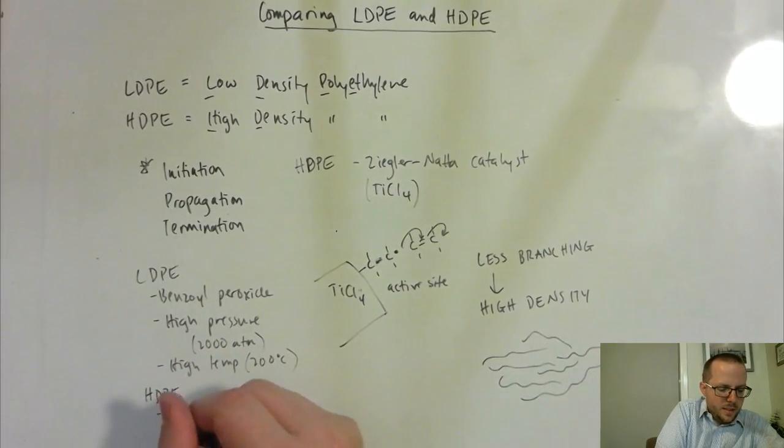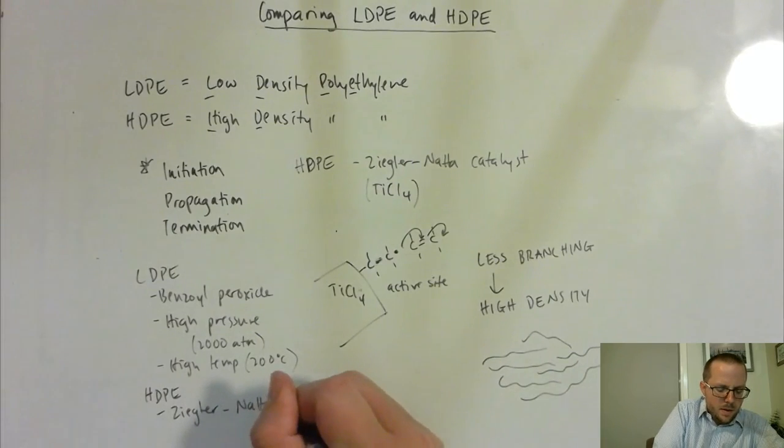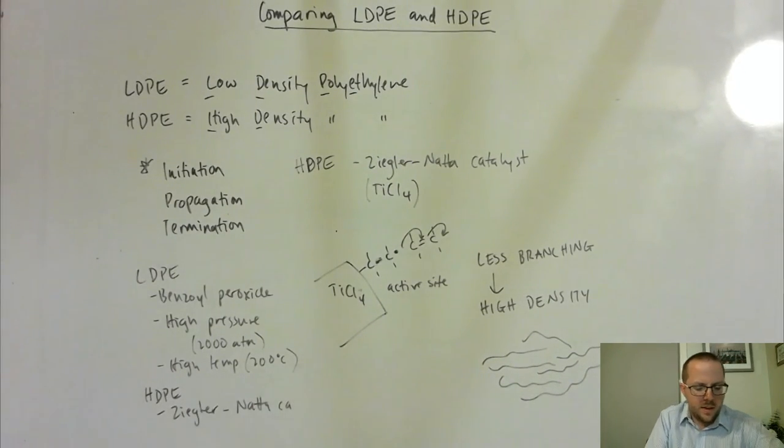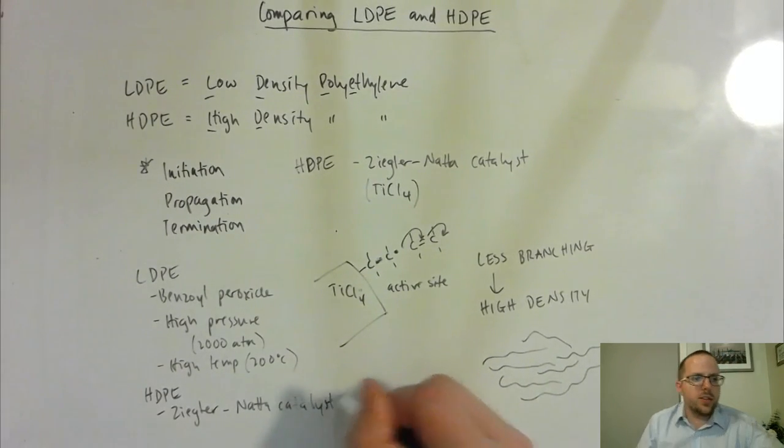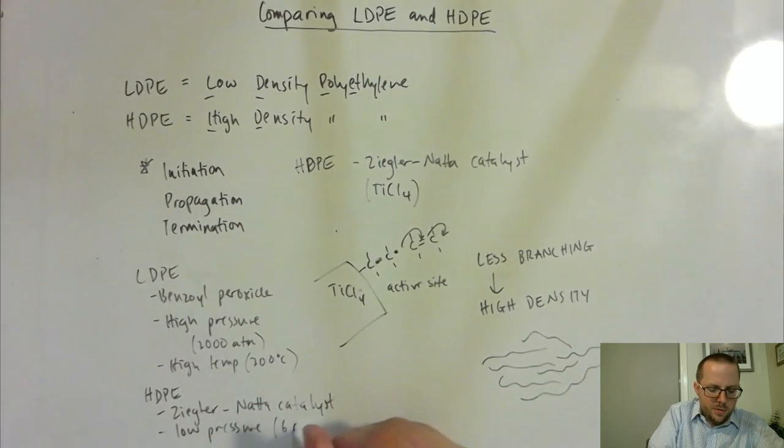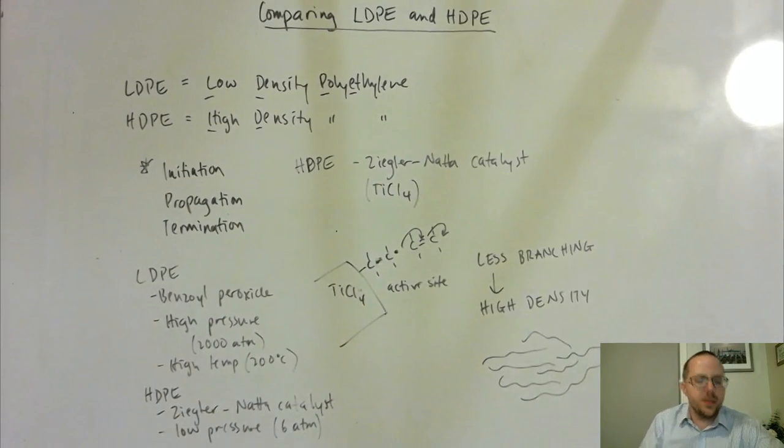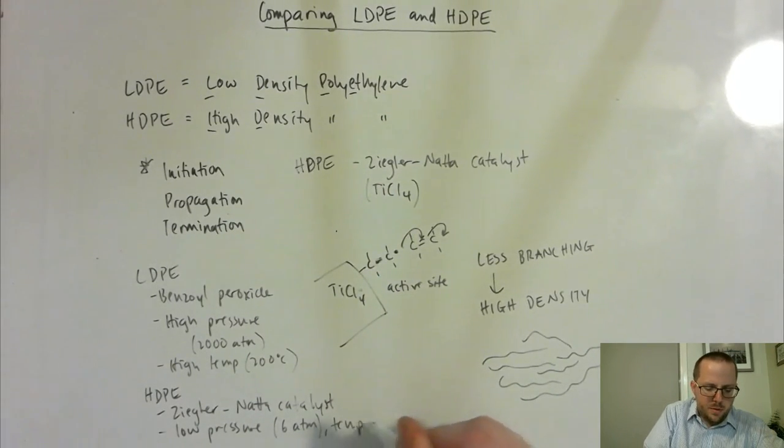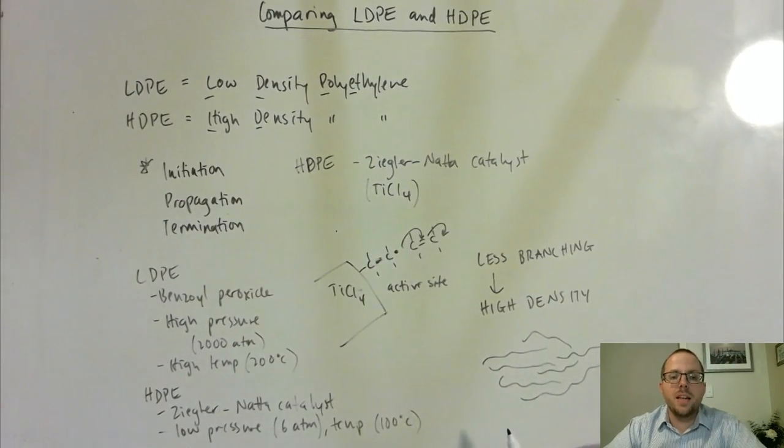We're using our Ziegler-Natta catalyst. That's Z-I-E-G-L-E-R-N-A-T-T-A, just because I realized that my handwriting's not always easy to read on this format. So we're using a lower pressure because we don't need it in order for those components to react together this time, and then low temperature as well, or lower, around about 100 degrees Celsius. So the different technique leads to a different molecular structure, which leads to different uses.